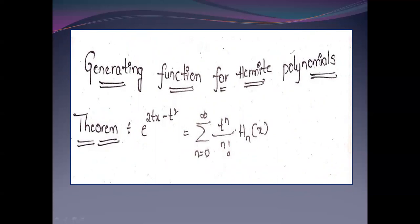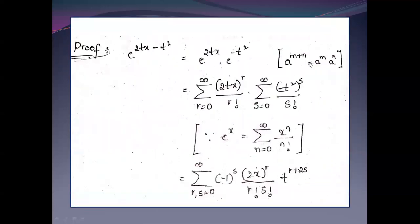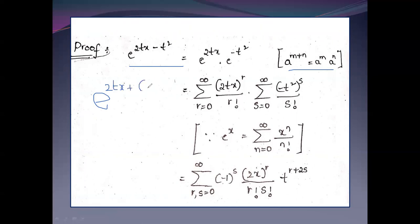This is the proof. We will find the LHS and expand it. That means e to the power of (2tx minus t²) equals e to the power of 2tx times e to the power of minus t². Using the property a^(m+n) equals a^m times a^n, we expand each factor separately.